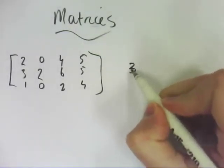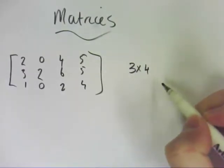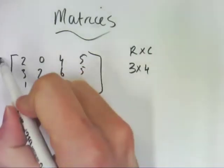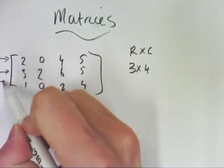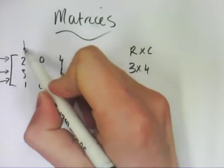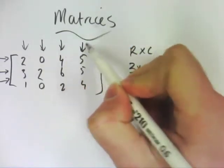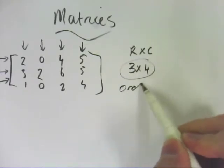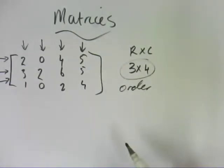This is what's called a 3 by 4 matrix. Rows by columns. So there are three rows, rows go across, and there are four columns which go down. And that's called the order of this matrix, it's a 3 by 4 matrix.